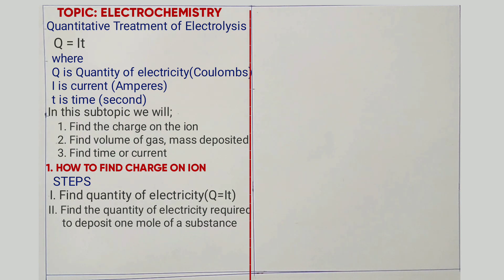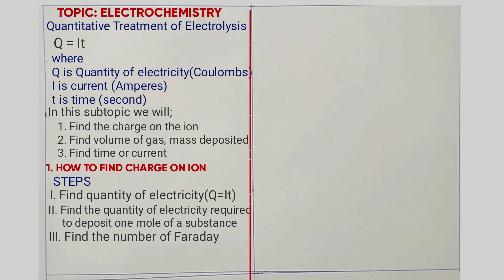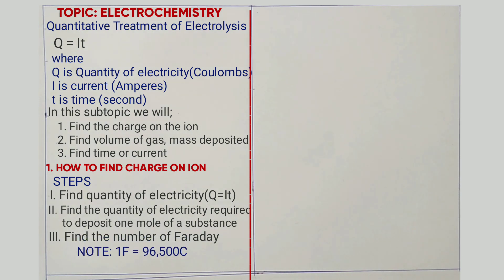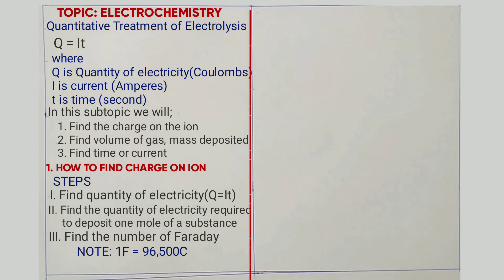Now step three is to find the number of Faradays. The number of Faradays is obtained by taking the quantity of electricity from step two and dividing by 96500. Now if you get 2 Faradays, that is the same as a charge of 2+. If the number obtained is 3.4, you round up to 3, giving a charge of 3+.